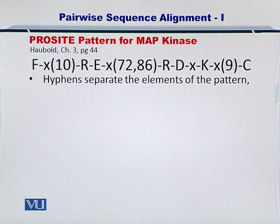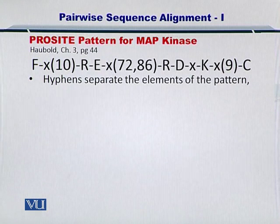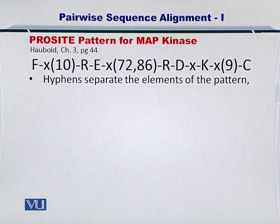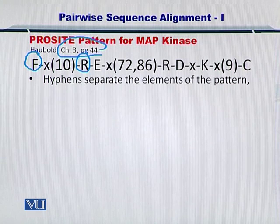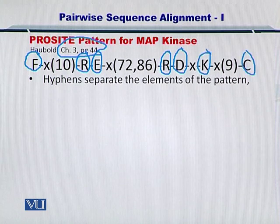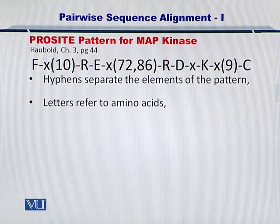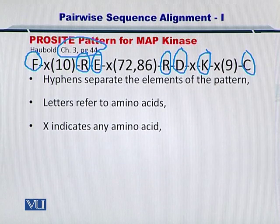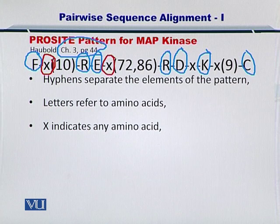Let's take a look at the ProSight patterns again. ProSight patterns allow you to build templates for inexact matching. This is from your textbook chapter 3, page 44. These are the amino acids as you already know, while X represents any amino acid from the 20 amino acids. Essentially when you have an X anywhere in the ProSight pattern, it means you can place any amino acid there.